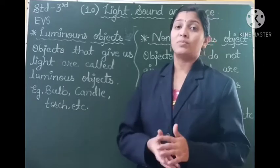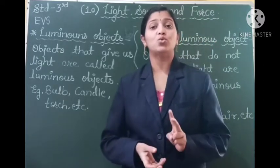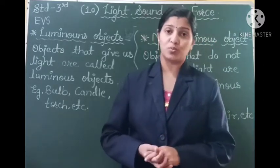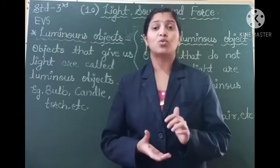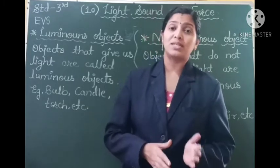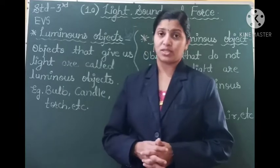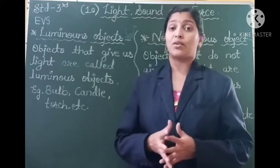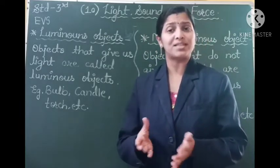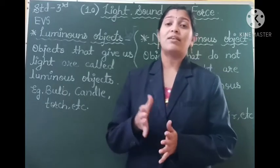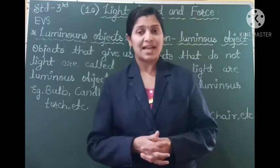These objects which are in our surroundings are divided into two groups. Which are these groups? The groups are luminous objects and non-luminous objects. You might be wondering what luminous and non-luminous mean, so I will tell you what these terms actually mean.